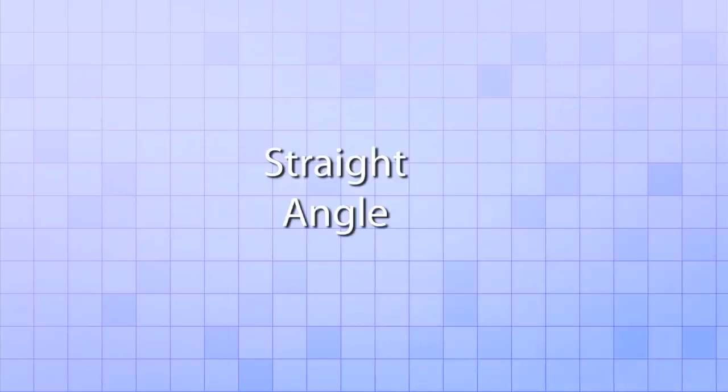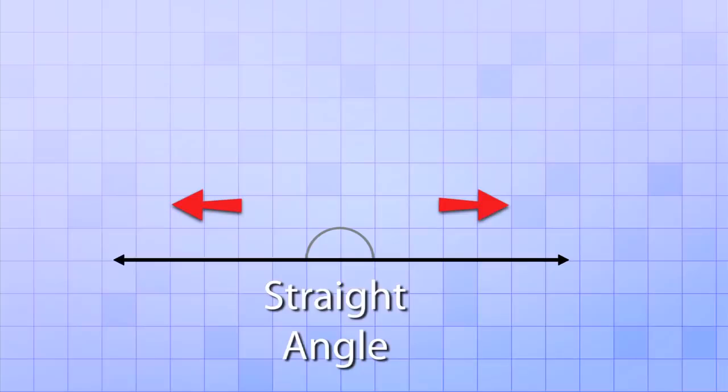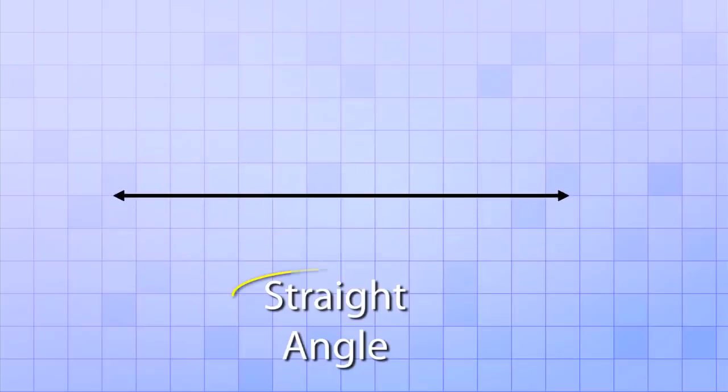Well, actually, there's one more type of angle that's pretty important, but it's kind of a strange one. It's called a straight angle. A straight angle is just what we get when we rotate our rays so that they point in exactly opposite directions. The result looks just like a straight line, which is why it's called a straight angle.